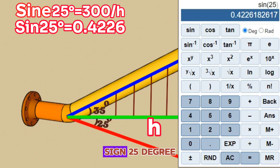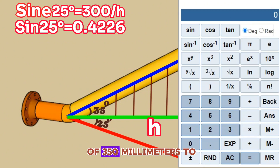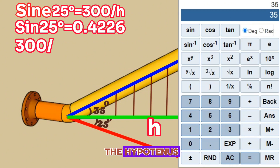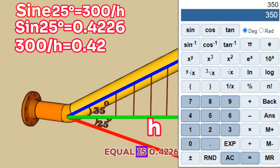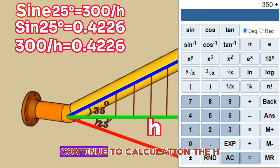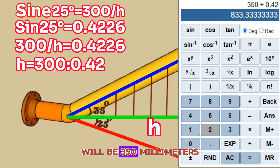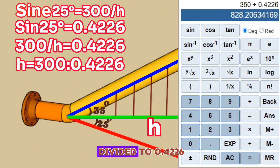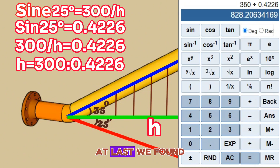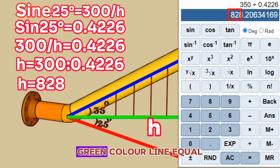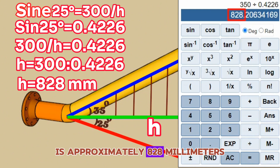As per the above formula, sine 25 degrees equals the ratio of 350 millimeters to the hypotenuse h, which is also equal to 0.4226. Continuing the calculation, the hypotenuse h equals 350 millimeters divided by 0.4226. We found that the hypotenuse h — the green colored line — is approximately 828 millimeters.